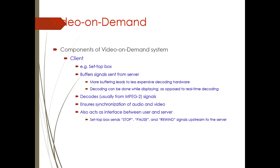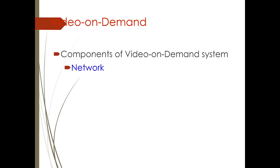Now the components of the VOD system. First, the client: the client must have a set-top box to decode the buffered signal, ensure synchronization of audio and video, and provide the interface between the user and the server — including stop, pause, and rewind functions. The network is also a critical component: it requires a continuous long-lived connection with bandwidth in the range of 1.5 Mbps to 5 Mbps. Delay and jitter must be minimized, and packets that miss their deadline must be dropped.